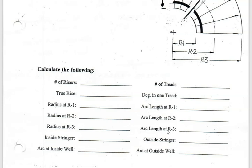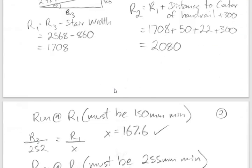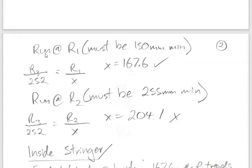Now let's figure out the arc length at the three locations. I've worked out the arc length at R1 and R2; we already have R3's arc of 252. To find the entire arc length at any radius, multiply the single-tread arc by the number of treads. The run at R1 must meet 150mm code. Using proportion — two similar triangles — we proportion off R3 and its arc of 252.